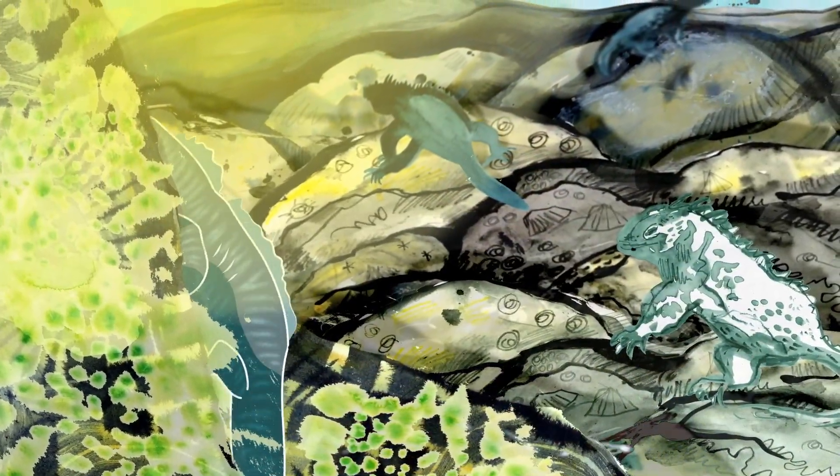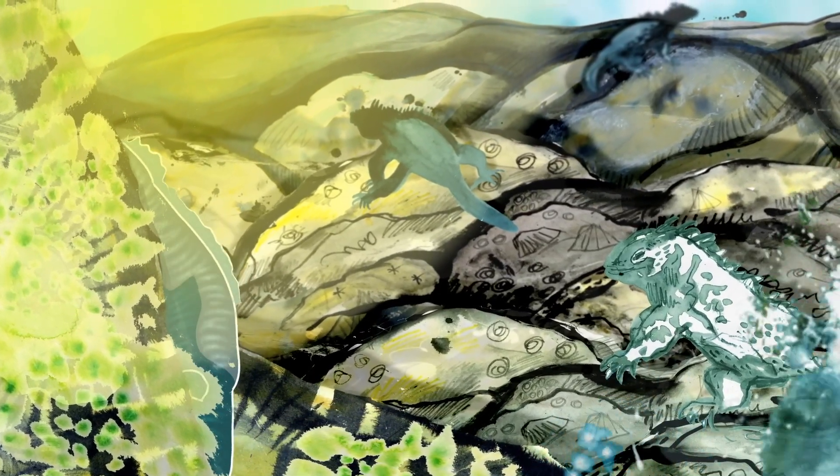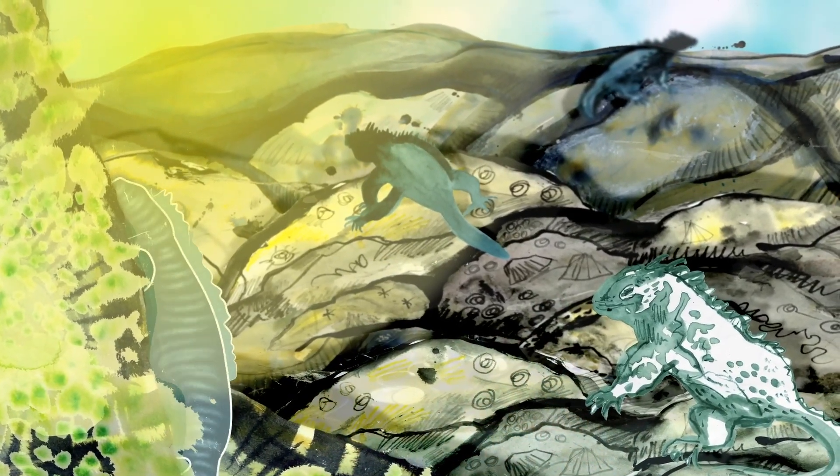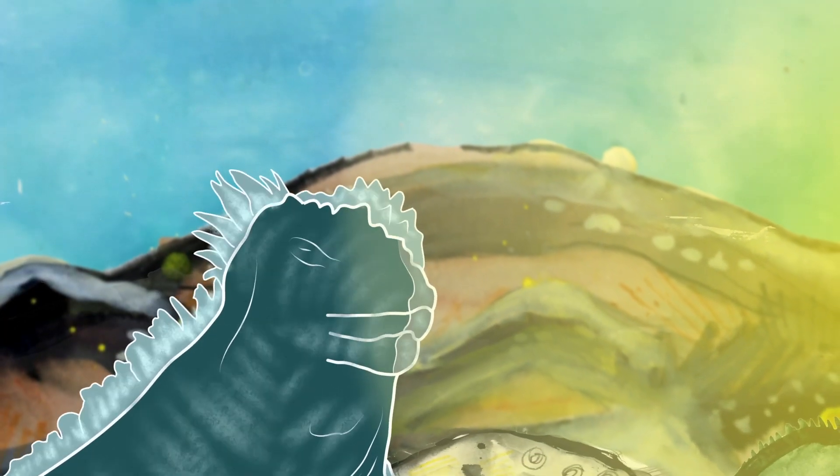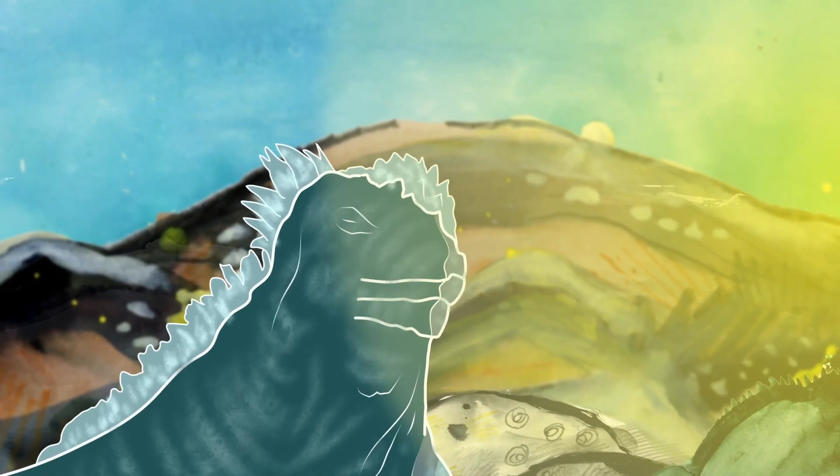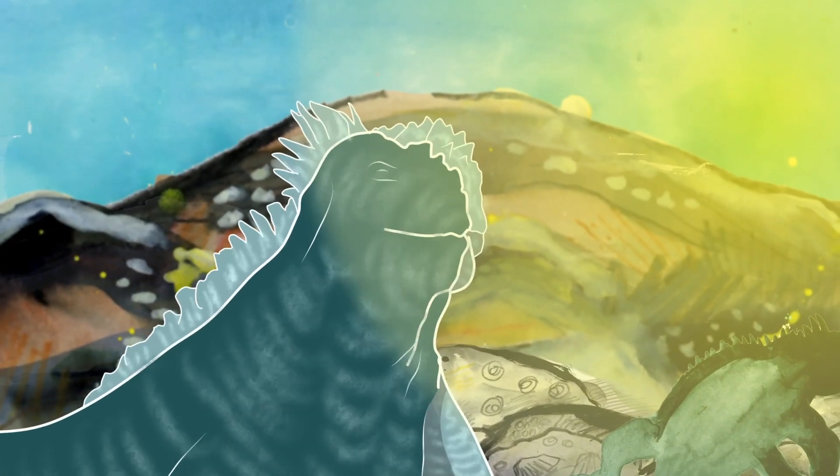This cold slows their muscles down, so they can't move as quickly. This is the same for all iguanas. They have to sit still in the sun to warm their bodies back up. This makes them vulnerable to being attacked by predators.